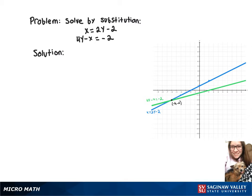To solve this system by substitution, we can take that x equals 2y minus 2 and substitute it into our second equation, which gives us 4y minus 2y minus 2 equals negative 2.